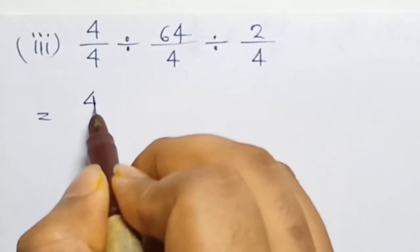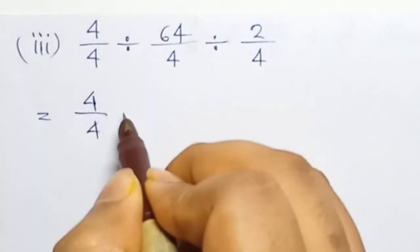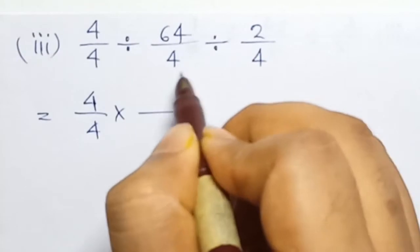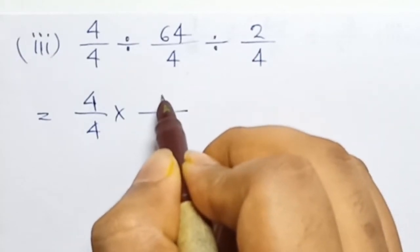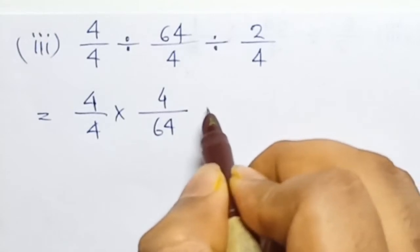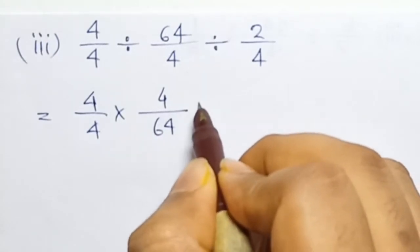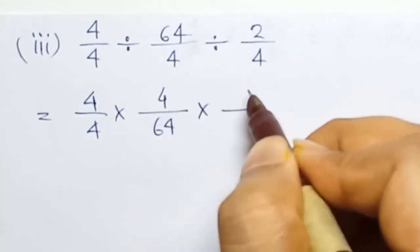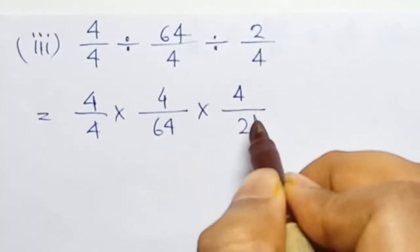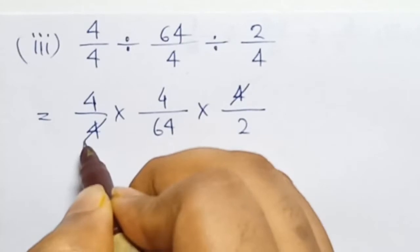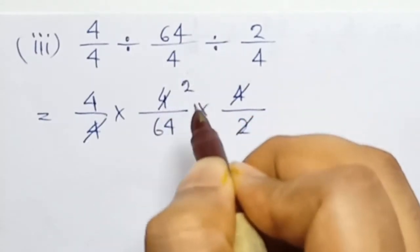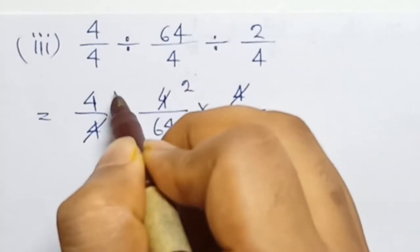First fraction: next, divide becomes multiplication. Multiplication — convert the fraction to its reciprocal: 4 by 64. Next multiplication — divide out: 4 by 2. Cancel A4 and A4, cancel 2 times cancel. Answer is 16.